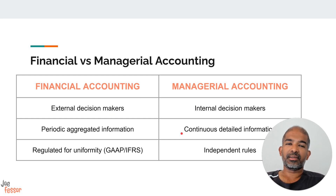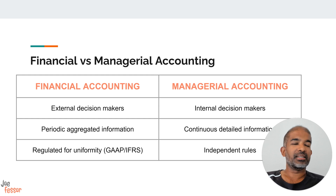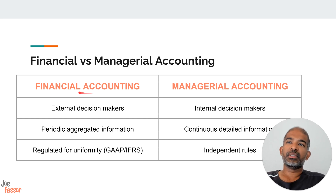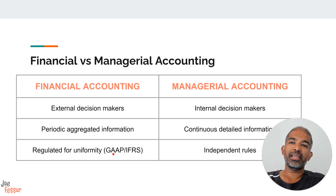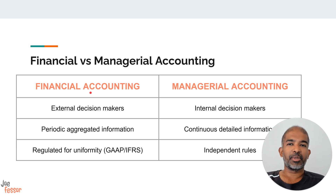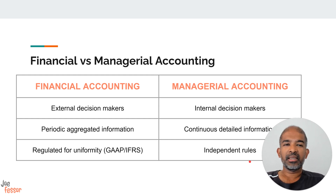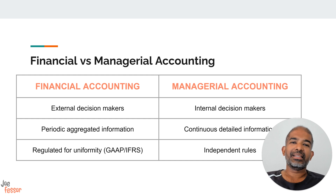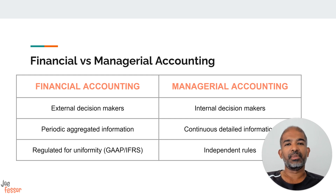Under managerial accounting, the goal is to provide continuous detailed information to the managers, with very specific information tailor-made for the purpose of planning, budgeting, and any kind of analysis that is necessary. The statements prepared using financial accounting are regulated for uniformity using GAAP and IFRS, so that they are consistent and can be used to compare among different firms. Under managerial accounting, you don't have any regulatory requirements per se, but you have flexibility in choosing the methods that work for you.